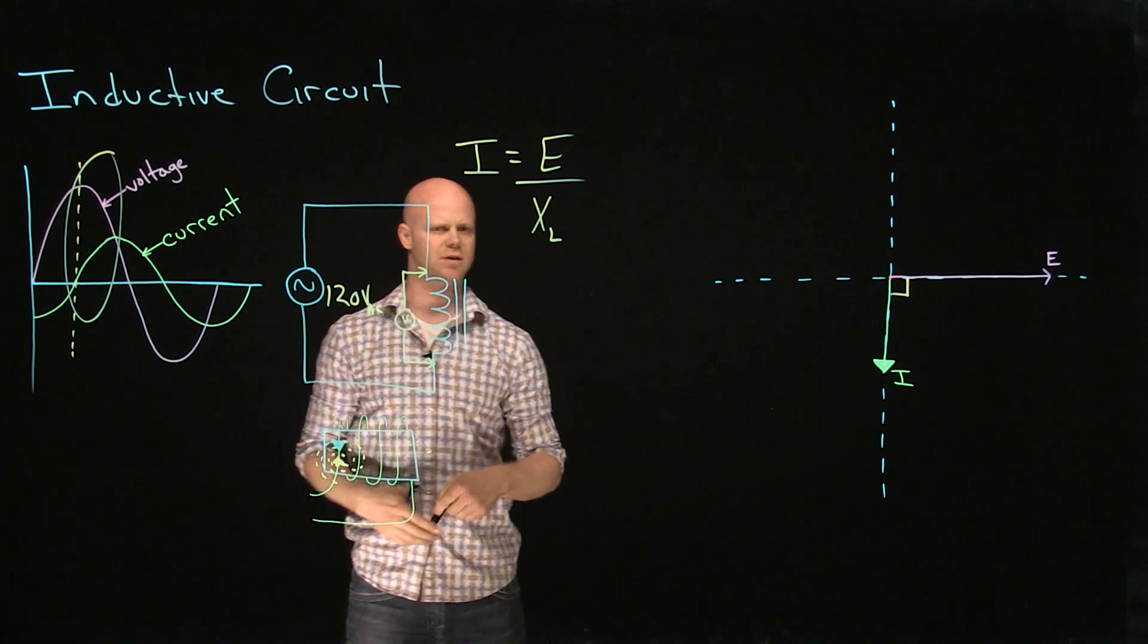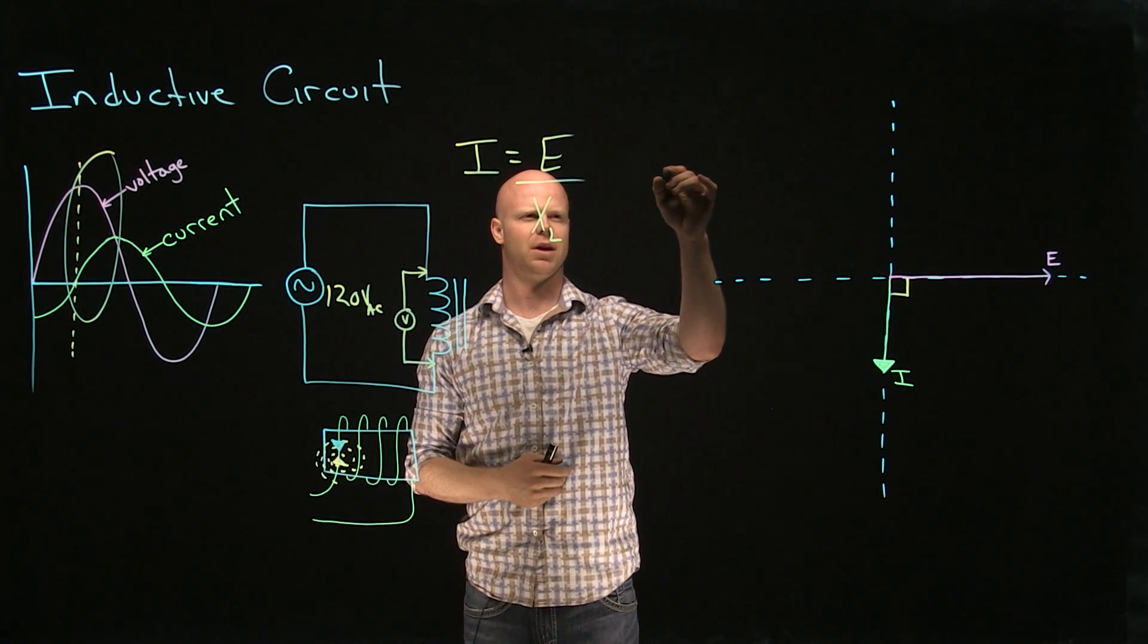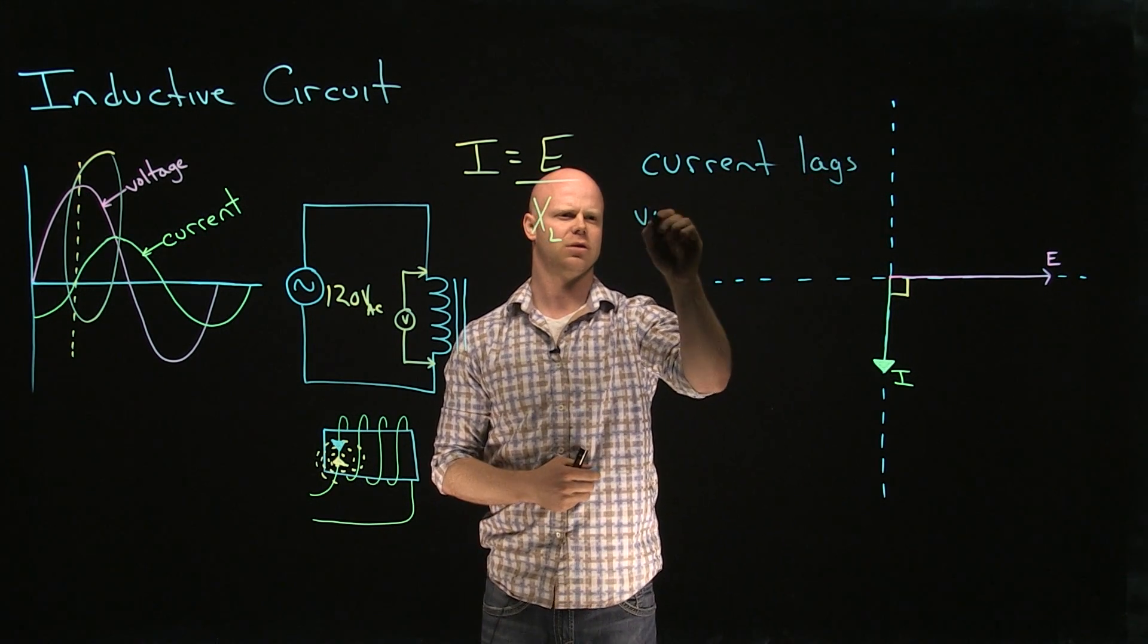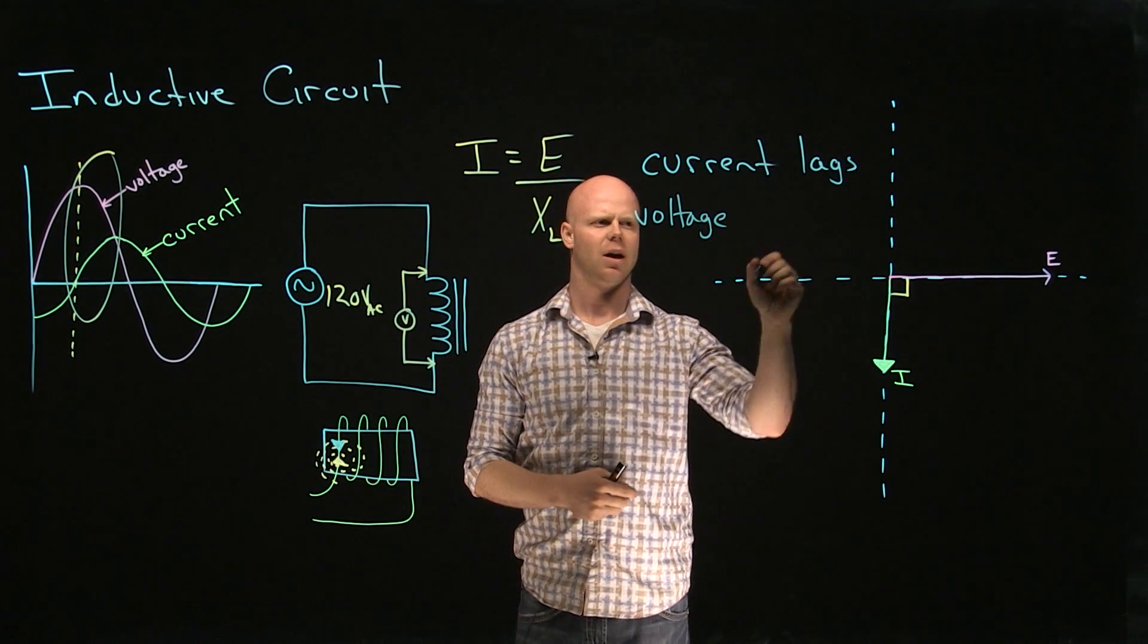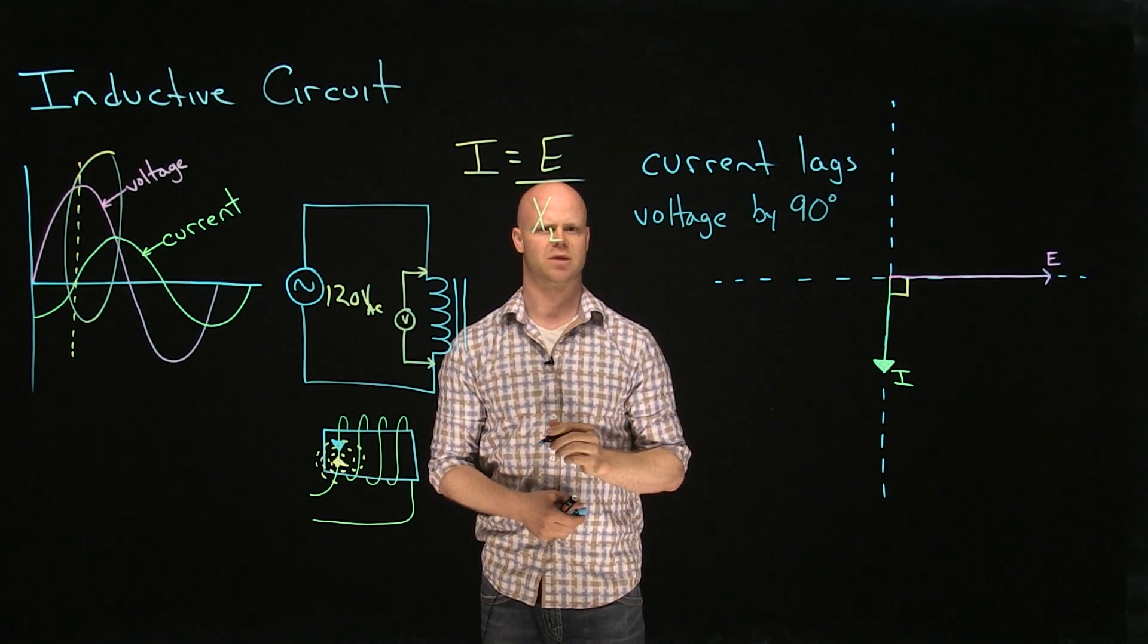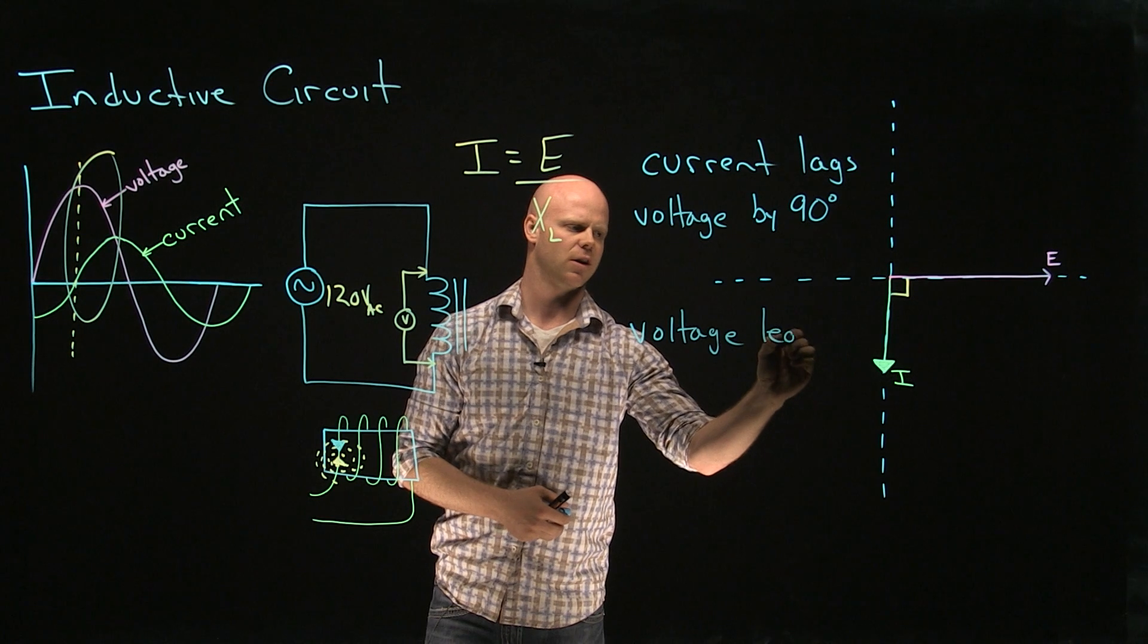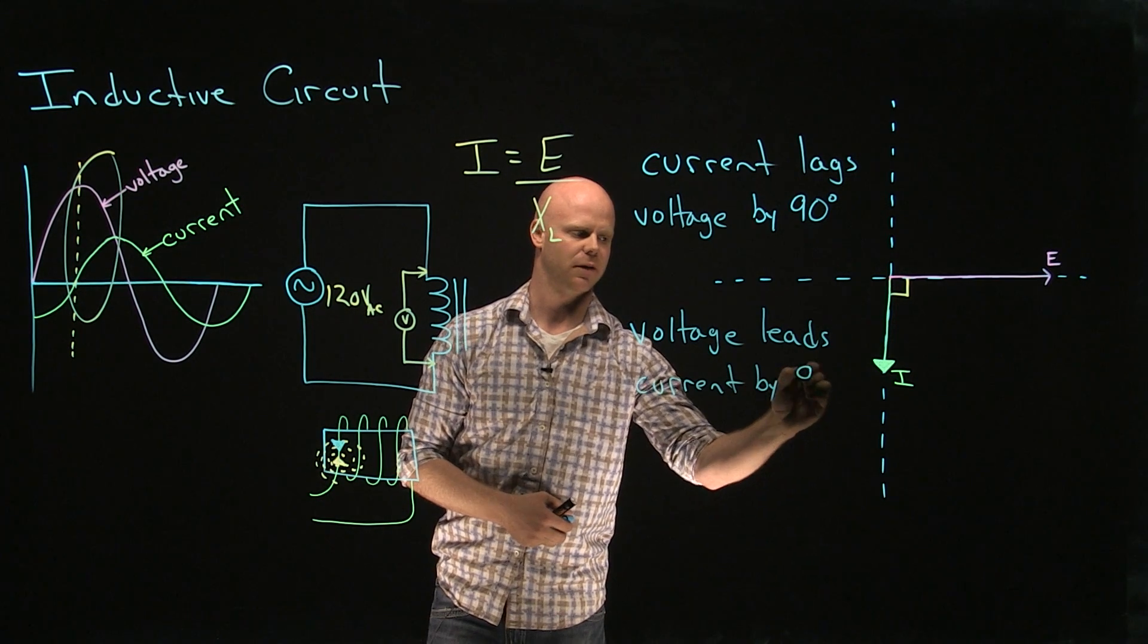So Ohm's law is still true for this circuit. So with this phase relationship, we can see that with an inductive circuit, current lags voltage. And with that inductor, we know by how many degrees or by the time. It is by 90 degrees. So the same statement I could make is that voltage leads current by that same period of time.